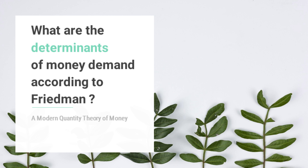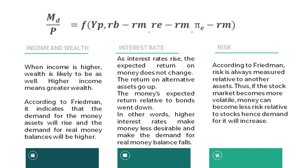The second question of the assignment: what are the determinants of money demand according to Friedman? This is the modern quantity theory of money. The first determinant is income and wealth. These two components tend to move together — when income is higher, wealth is likely to be higher as well. Hence higher income means greater wealth, and according to Friedman, this indicates that the demand for money assets will rise and the demand for real money balances will be higher. In the formula, Yp, which represents wealth or permanent income, has a positive relationship with real money balances, Md divided by P.